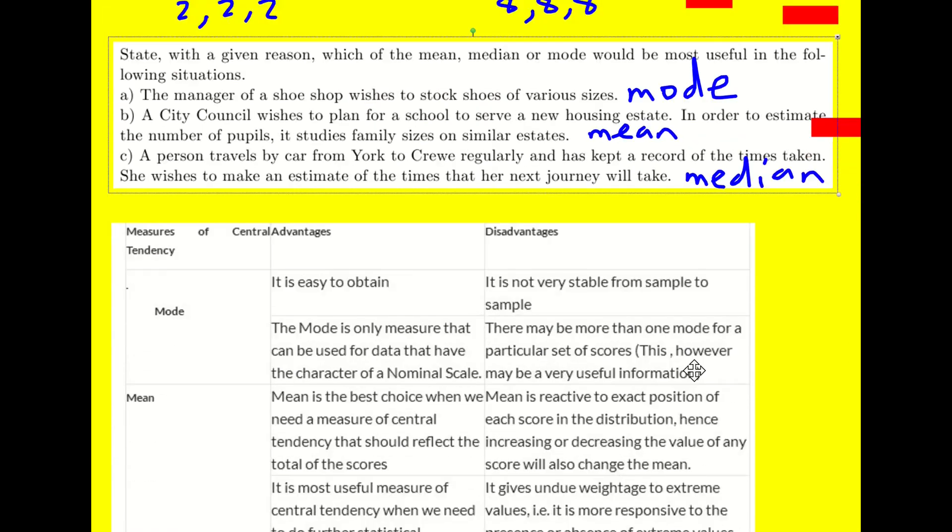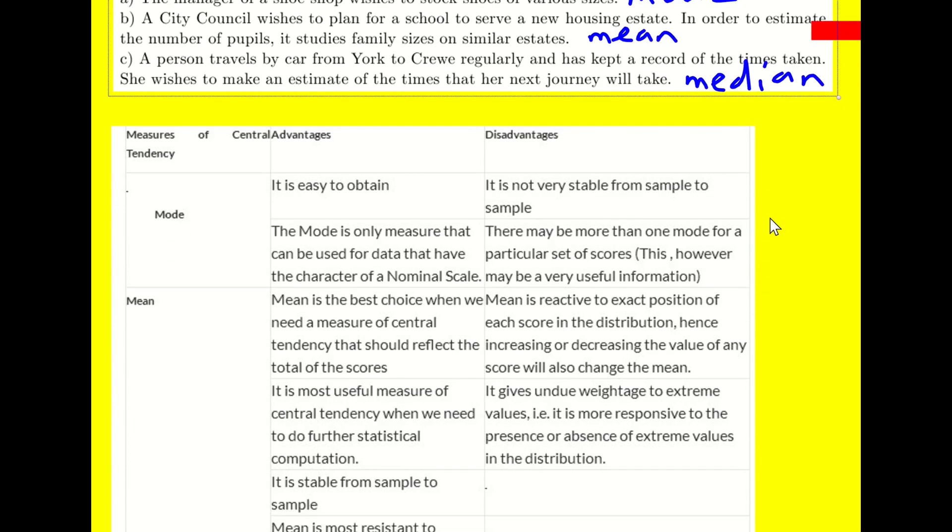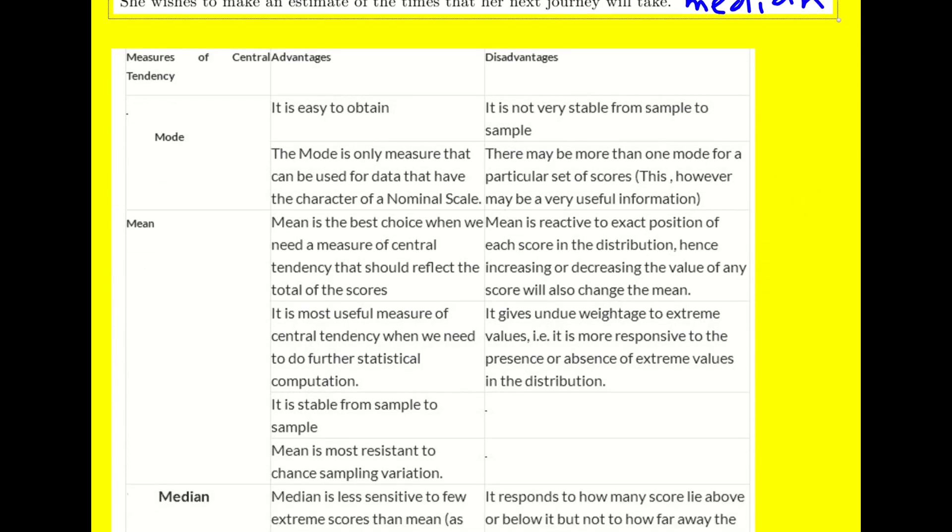Okay. Here's a little bit more, maybe going a bit beyond the A level that we need to know, but I think it's useful to talk about these. So some advantages and disadvantages of the three main averages that we're using. The mode easy to obtain. And also it's the only measure that can be used for data that have the character of a nominal scale.